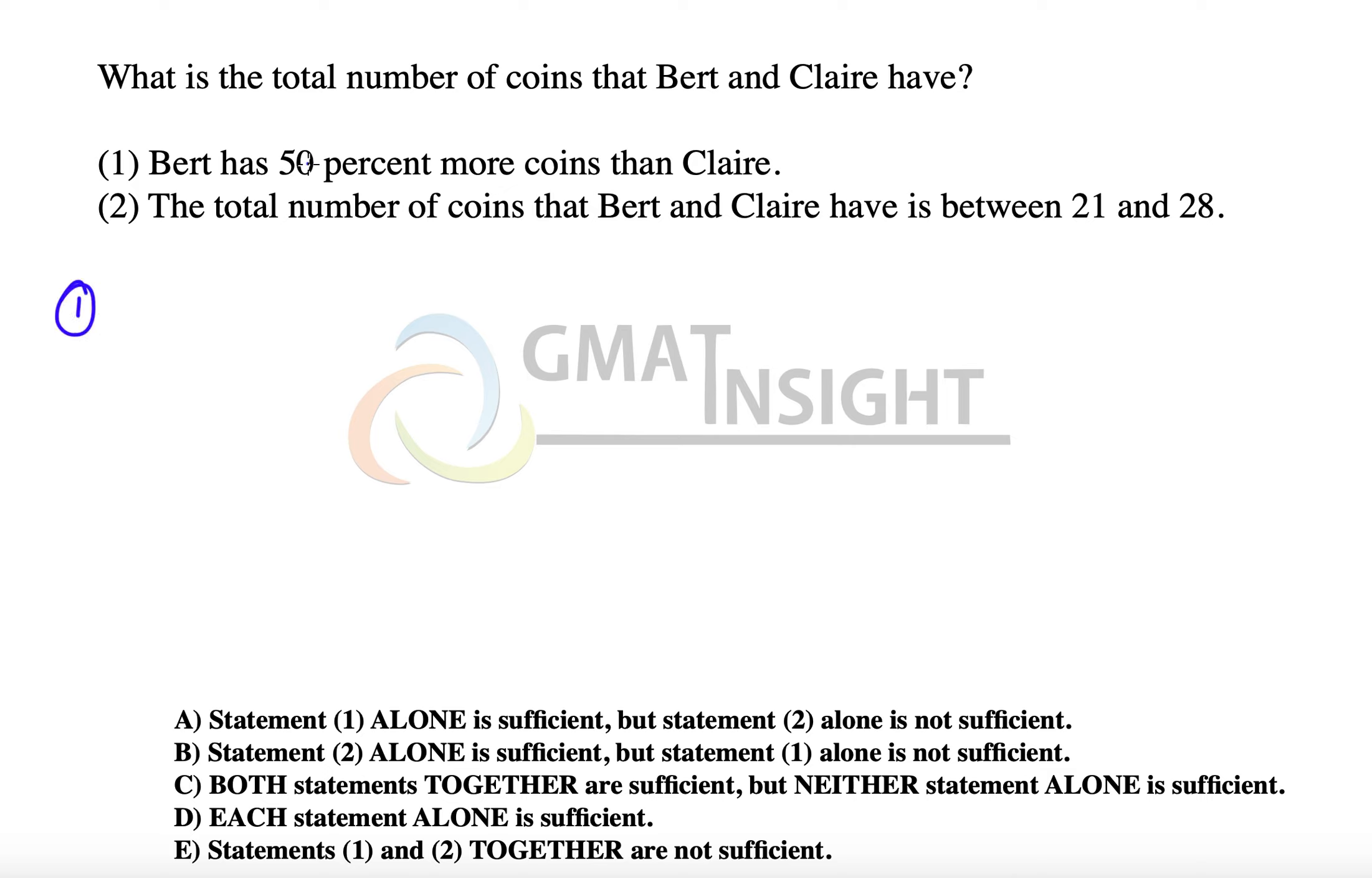The first statement says that Bert has 50% more coins than Clare. So if Clare has x coins, Bert has 1.5x coins. The total number of coins will be x plus 1.5x which equals 2.5x, but x is unknown. Therefore, the first statement alone is not sufficient to answer the question.